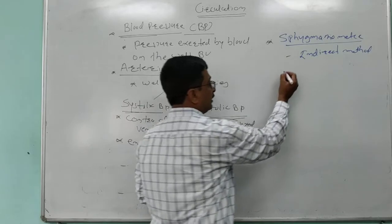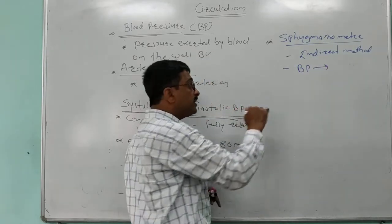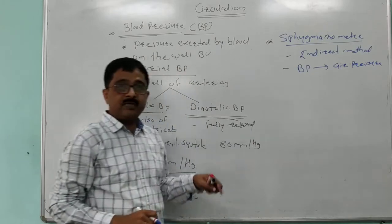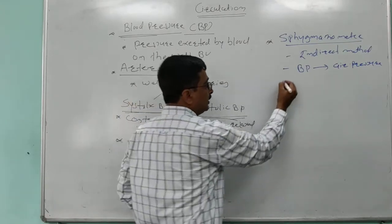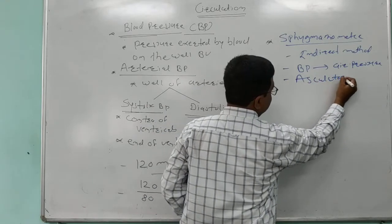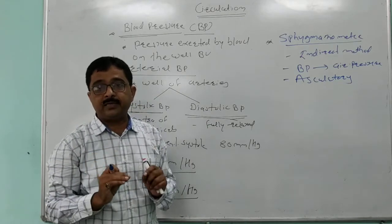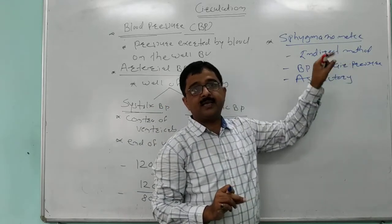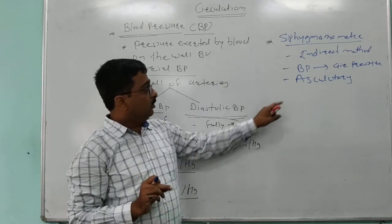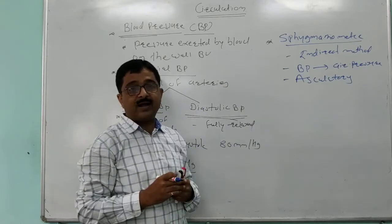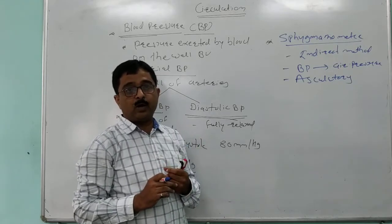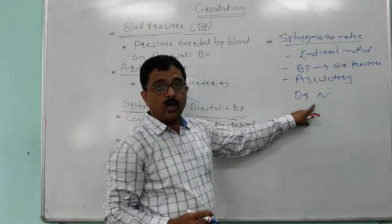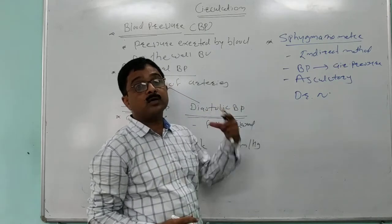In this indirect method, the blood pressure is first converted into air pressure and then it is measured with the help of the sphygmomanometer. This method is also called the auscultatory method. The modern sphygmomanometer, or BP apparatus, was invented by Dr. Nikolai Korotkov.